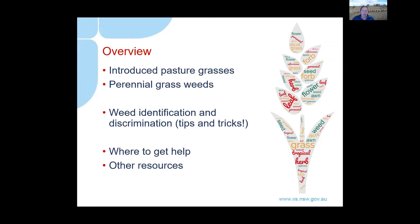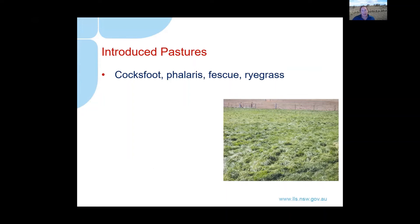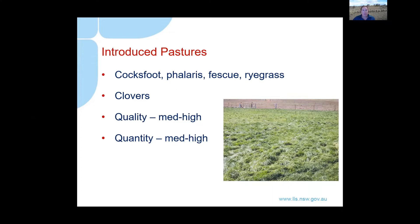The main pasture species we work with up in the Tablelands are cocksfoot, phalaris, fescue, and ryegrass — all temperate species. We also partner these grasses with introduced clovers. People sow introduced pastures for a reason — it comes at a cost and with risks, but they can provide medium to high quality feed for livestock production, and fairly high quantity of feed as well.